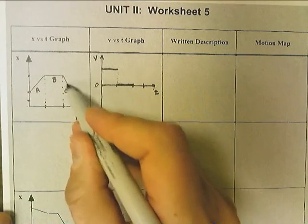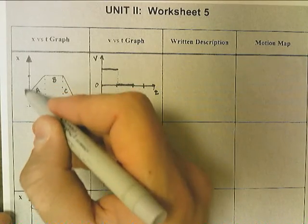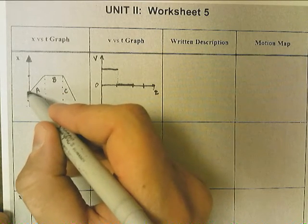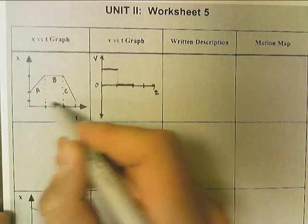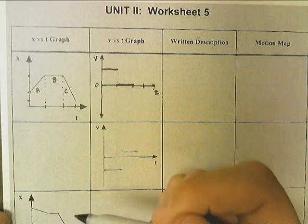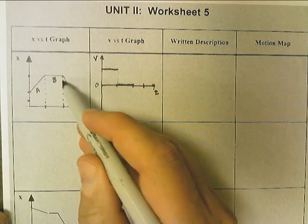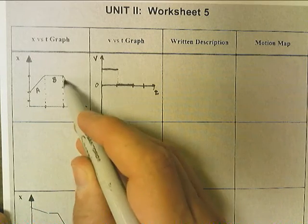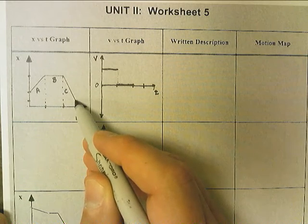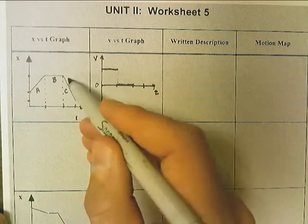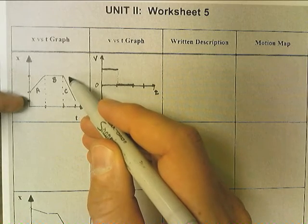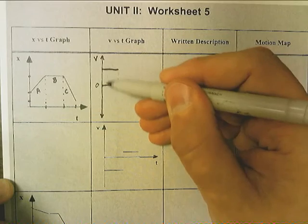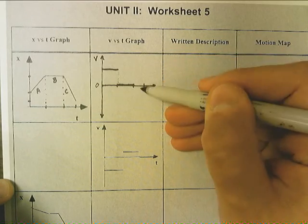And now it changes direction, and it goes back the way that it came, but it passes the point where it started and ends at a point a little bit farther. And that means it's going faster. A smaller amount of time passes than here, and it covers a larger distance. So it has a negative velocity because it's going in the negative direction. But it's also faster, which means it's not going to be this far away from the axis. It's going to be farther.